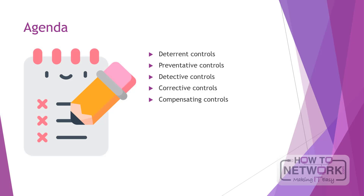Risk is dealt with using five types of controls: deterrent, preventative, detective, corrective, and compensating. It is important to note that many of these controls will overlap. For example, a wall around a perimeter will both prevent and deter attackers from attempting to cross the property line. This section will focus on security controls, which are a subset of risk mitigation. Security controls are those which interfere with the human attacker or the software or hardware they are using, who is carrying out an unauthorized intrusion into your information systems or causing damage or disruption to those systems.